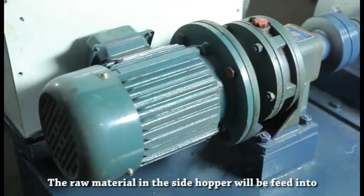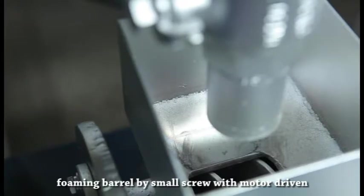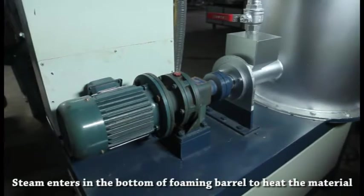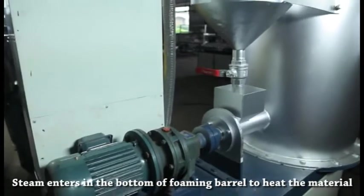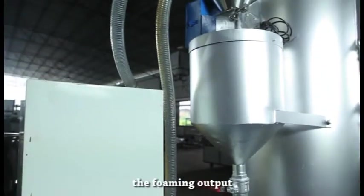The raw material in the side hopper will be fed into the foaming barrel by a small screw with motor driven. Steam enters the bottom of the foaming barrel to heat the material. The steam pressure can be freely adjusted according to the foaming output.